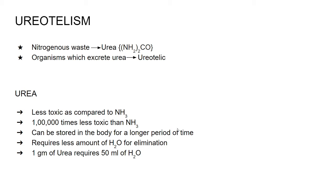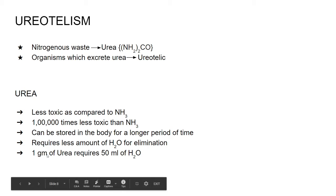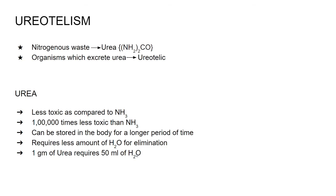Urea also requires less water for elimination. To eliminate one gram of ammonia, almost 300 to 500 ml of water is required, whereas to excrete one gram of urea, only 50 ml of water is required. So organisms which cannot afford to lose that much water can choose ureotelism over ammonotelism.